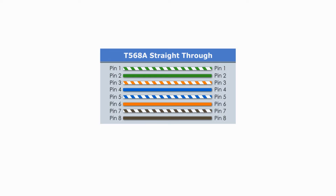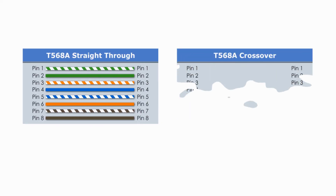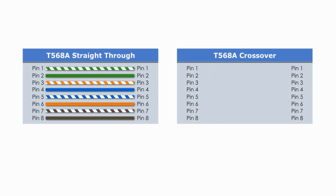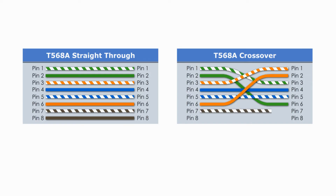A type A crossover cable is different. One end is a type A connector and the other end is a type B connector. Specifically, green and orange colors are swapped.